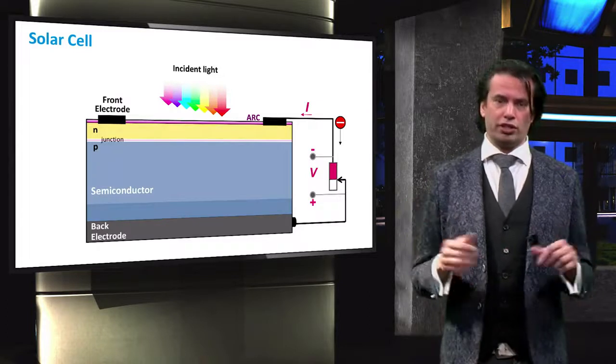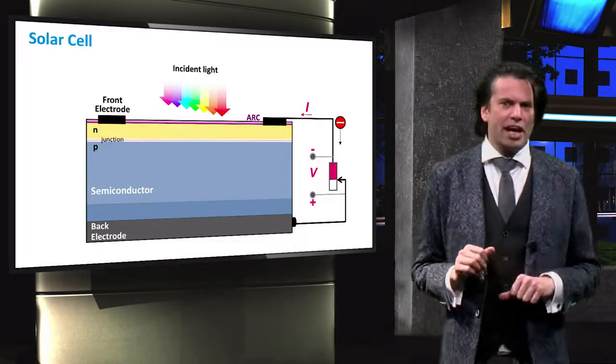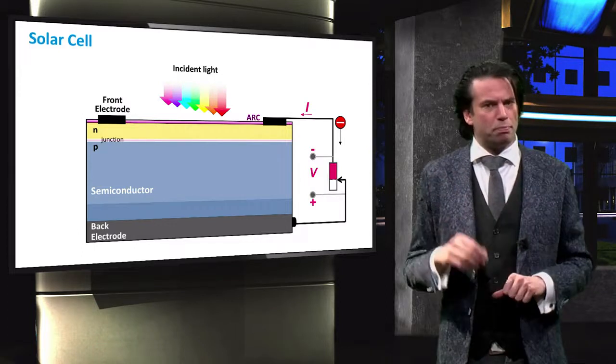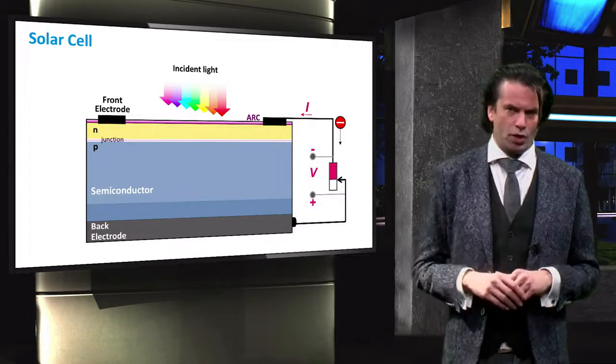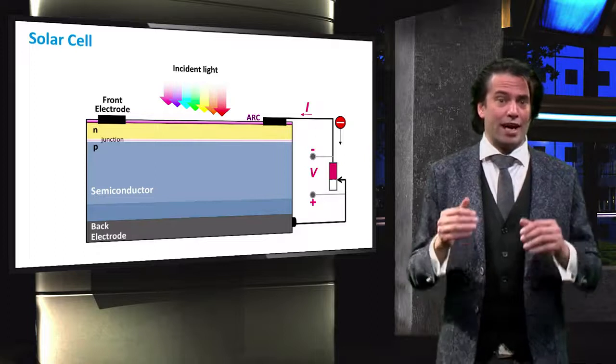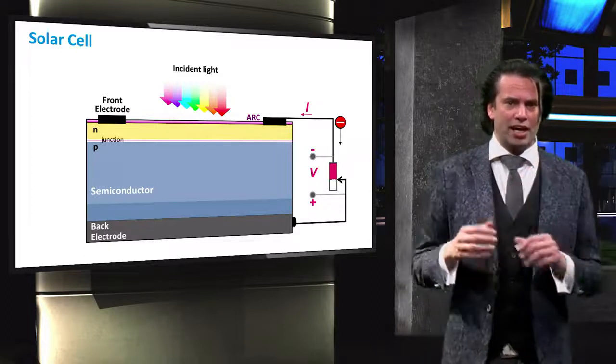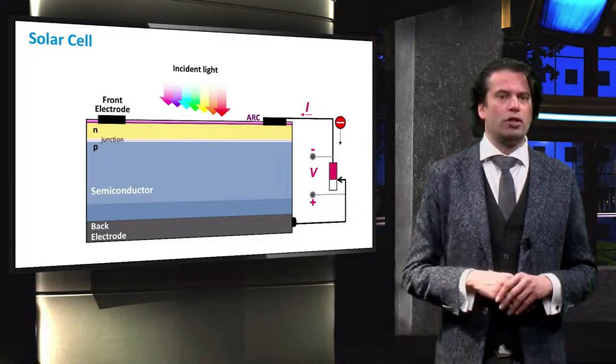Here we see a basic solar cell schematic. There are many different components and layers, and you will become familiar with the properties and purposes of all these layers throughout the course. All you need to know for this video is that a solar cell can take energy from illumination and convert it into electrical energy in an external circuit.